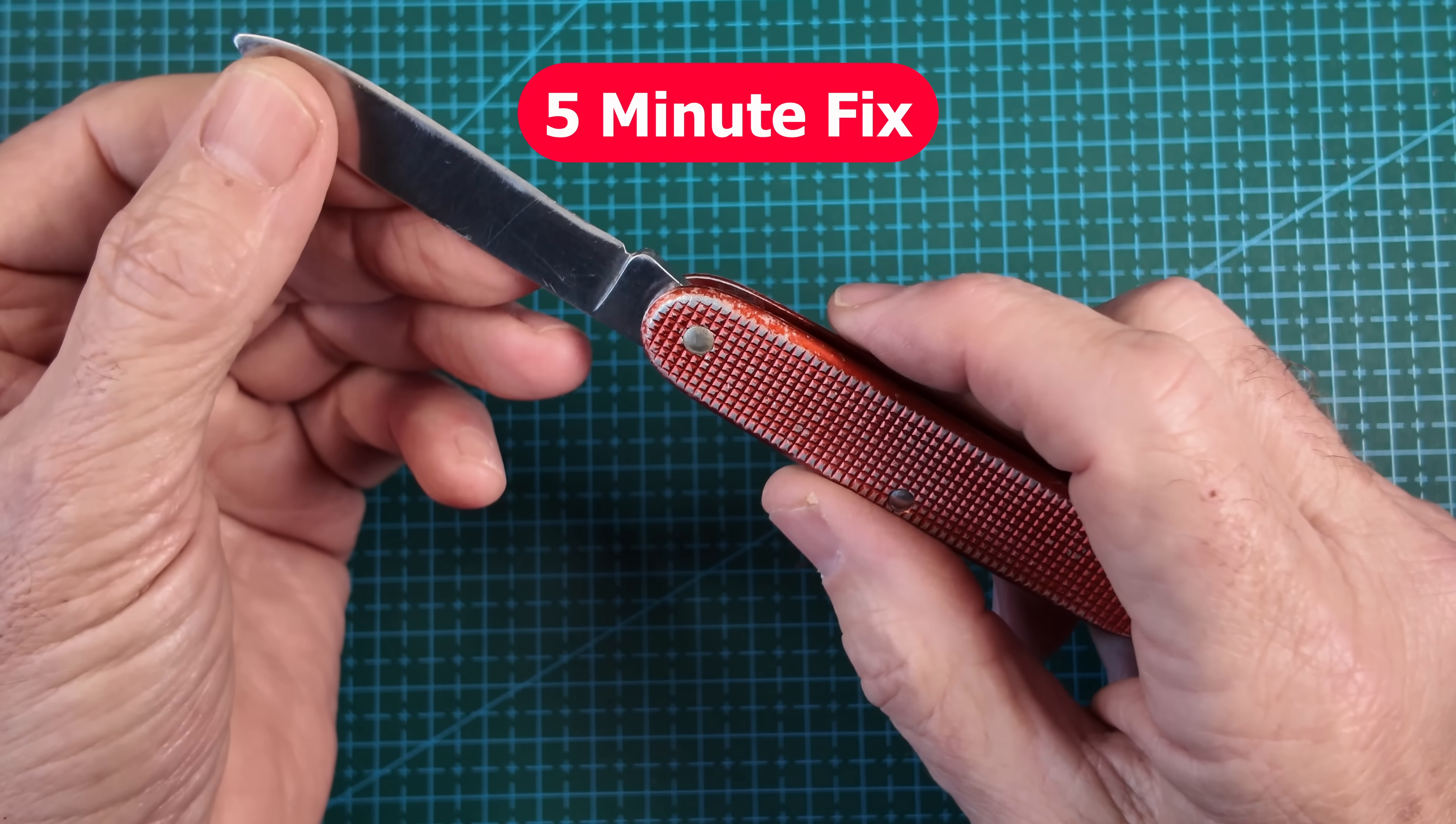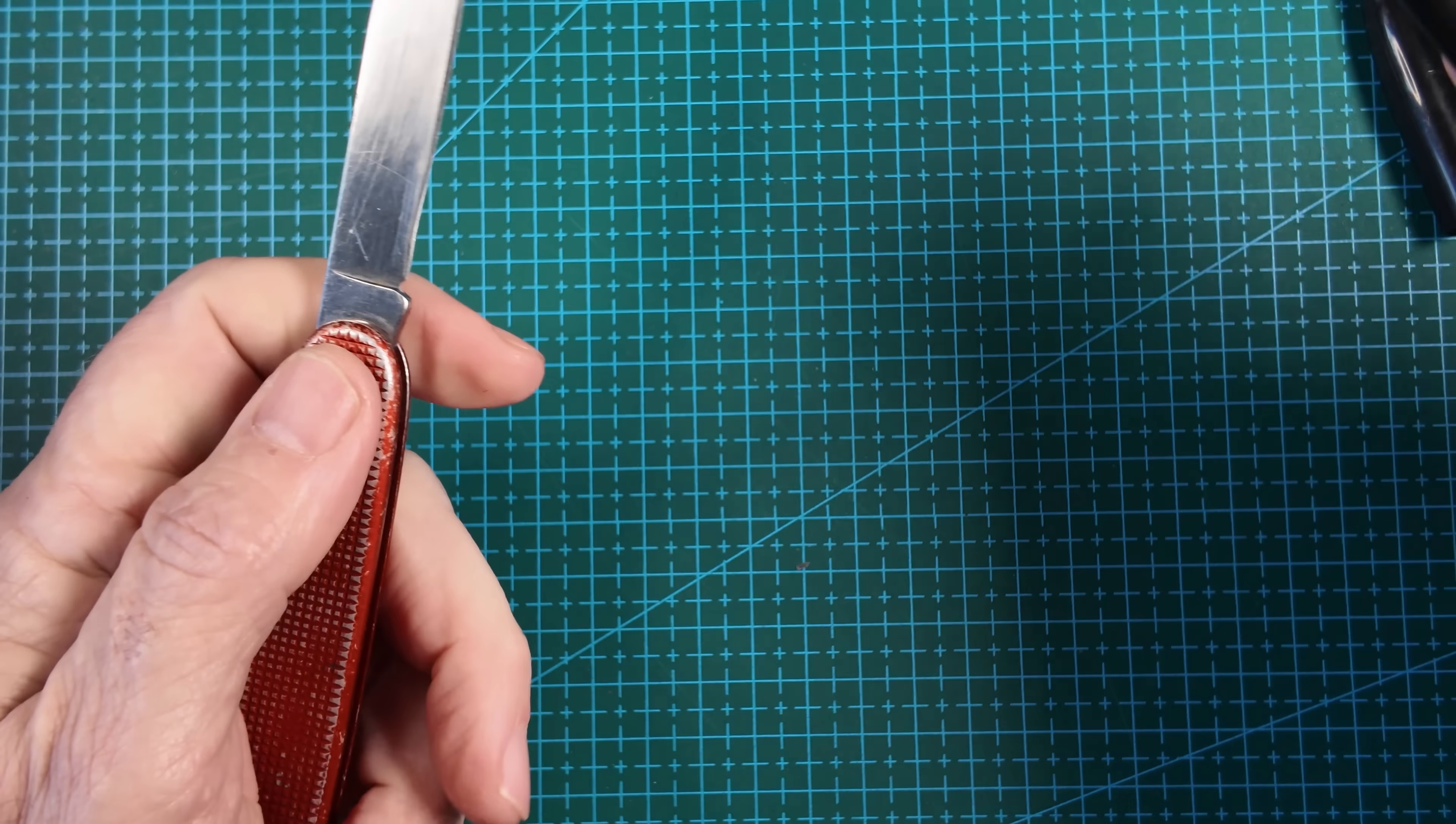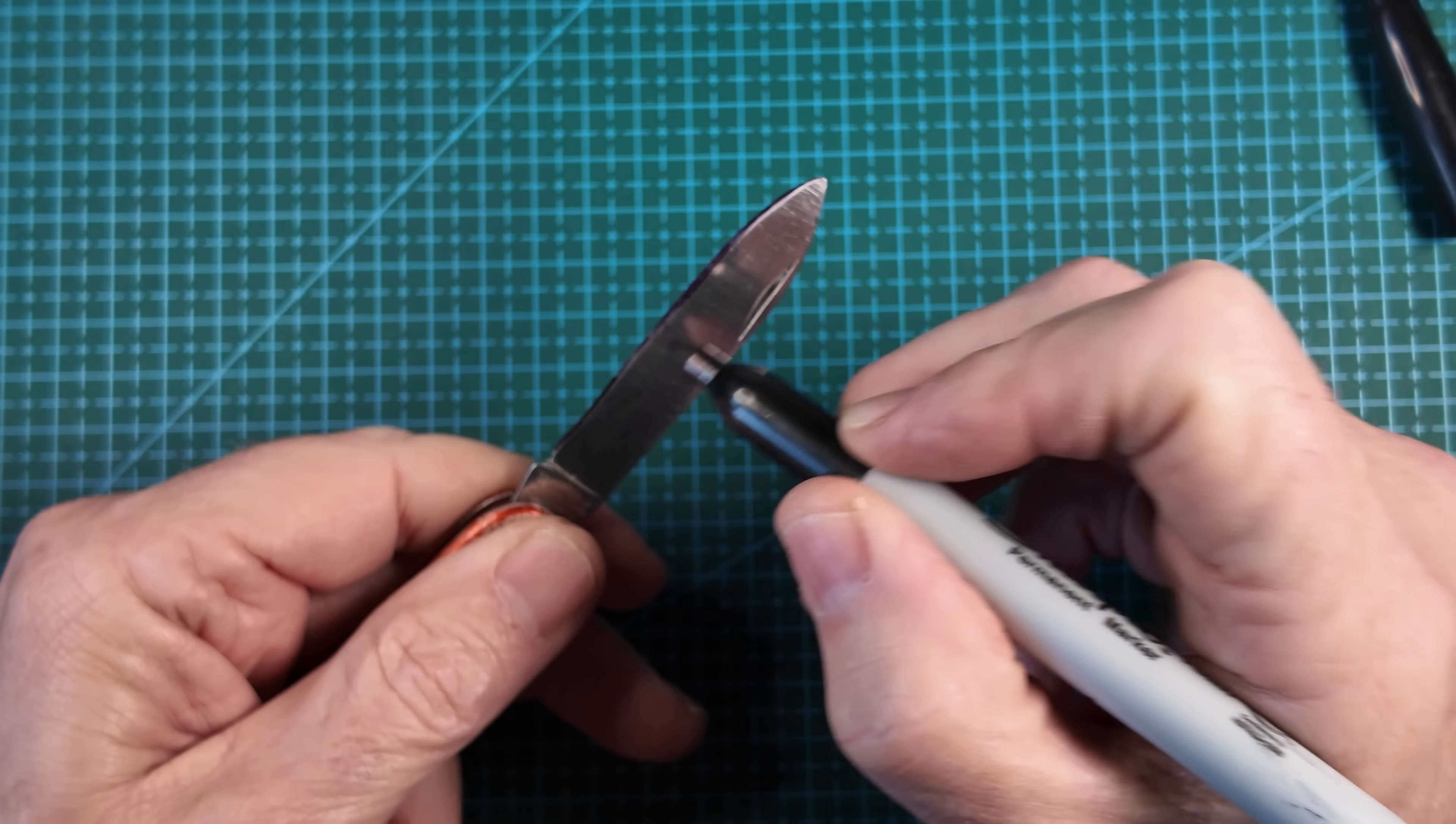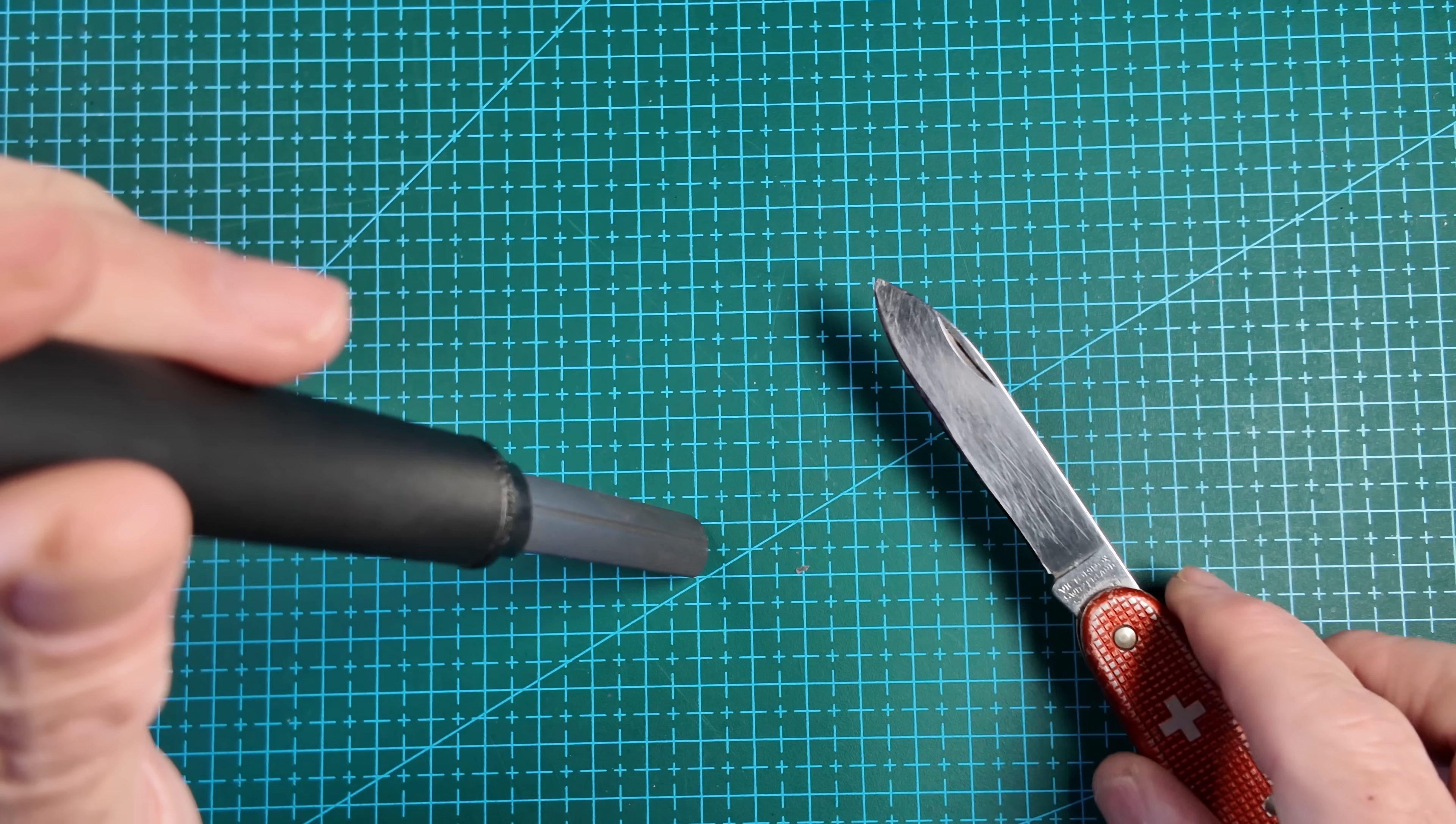You don't need to be a pro sharpener or have expensive kit to fix this. The first thing is the marker trick. I'm sure you've seen this in other videos. Just take a permanent marker and mark along the blade edge on both sides. I'm not sure how well this is going to show up on here. It probably just looks dark.